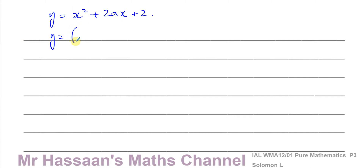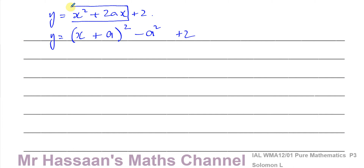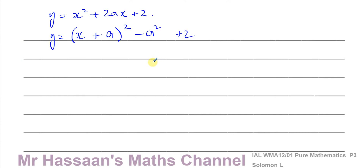Putting the bracket in: x plus a half of the coefficient of x. The coefficient is 2a, so half of 2a is a. Then we take away a squared — because when we expand the bracket we get x squared plus 2ax plus a squared, and there's no a squared in the original, so we subtract it. Then we add the plus 2 at the end. That's why we take away the a squared.